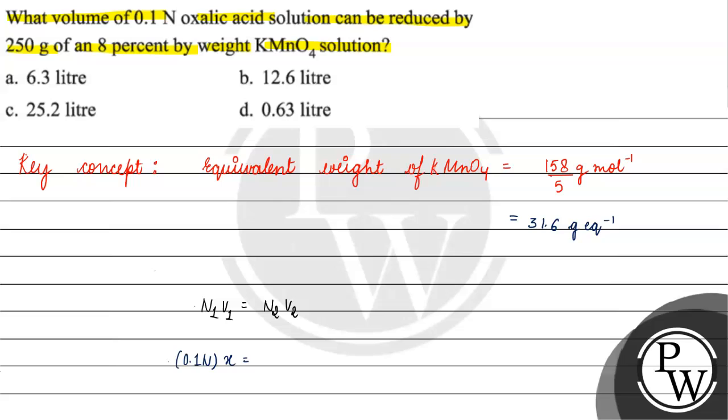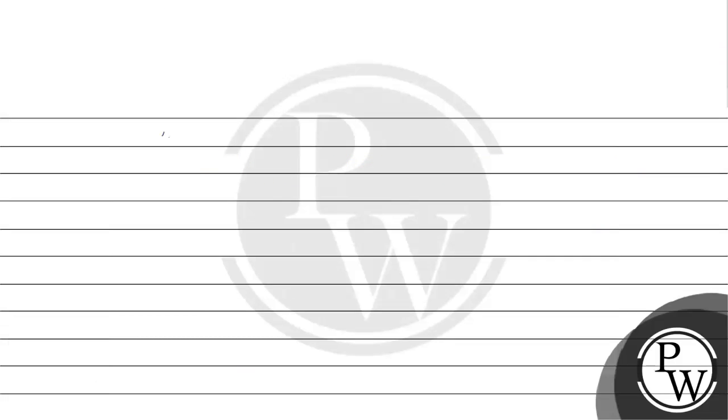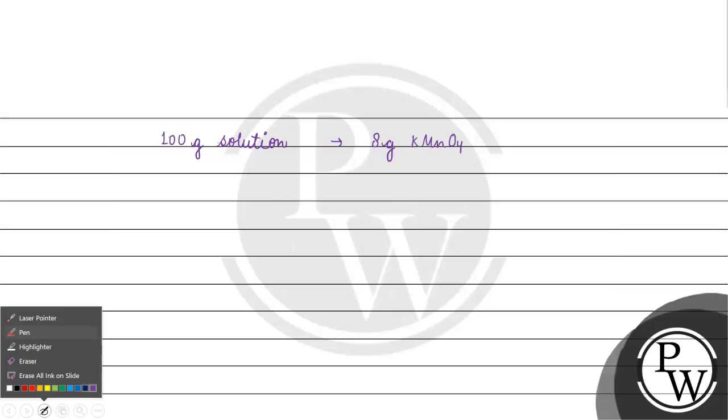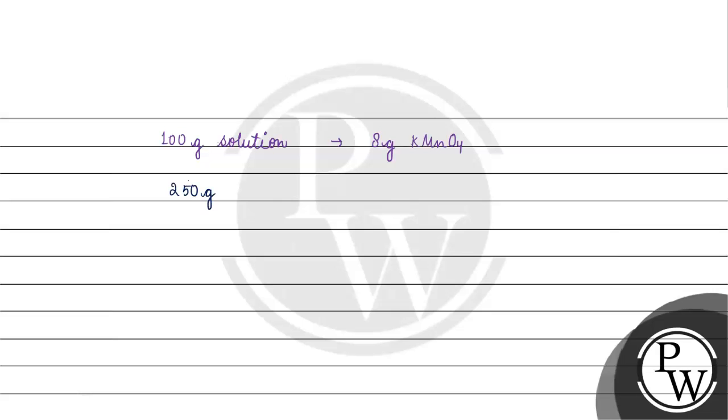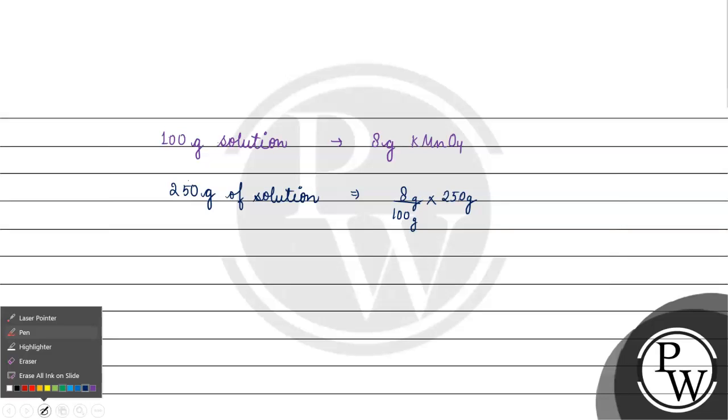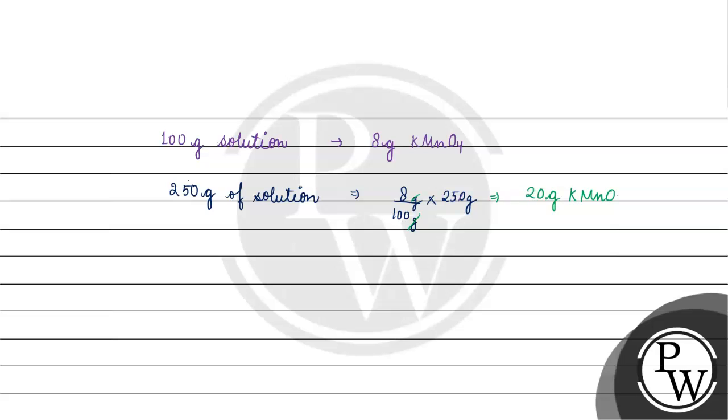We have 250 grams of 8 percent by weight KMnO4 solution. If 100 grams of solution contains 8 grams of KMnO4, then in 250 grams of solution, we have 8 over 100 times 250 grams, which gives us almost 20 grams of KMnO4.